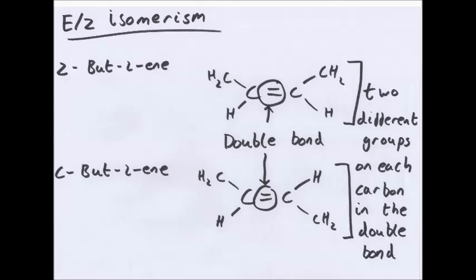Now, the conditions needed for E-Z isomerism is to have a carbon-carbon double bond, which prevents rotation of the molecule, and two different groups on each carbon in the double bond. So, if you had three H's in CH2, that cannot undergo E-Z isomerism.